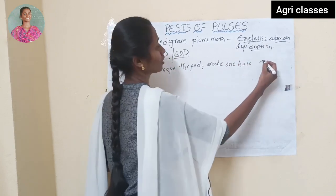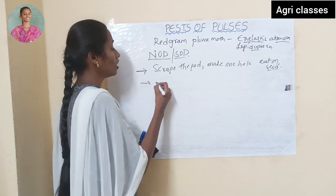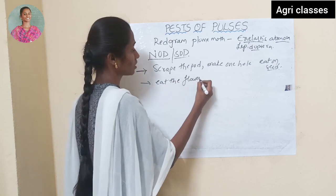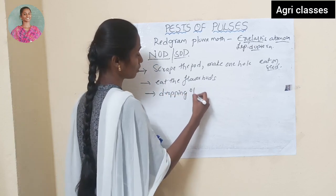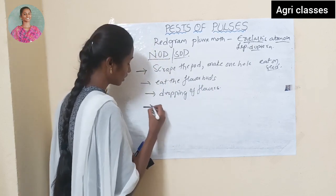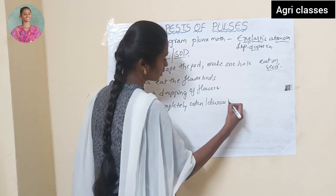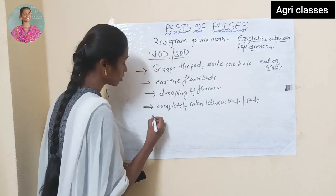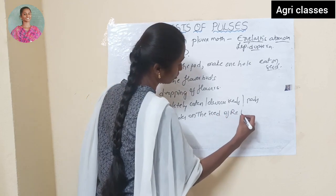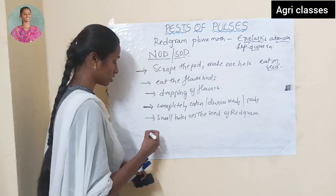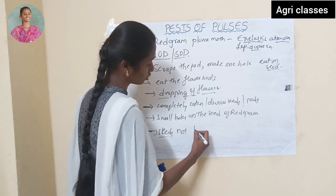They completely devour the seed. They also attack on flower buds — due to attack on the flower buds, we can observe dropping of flowers in severe cases. We can observe completely eaten away or devoured seeds of red gram, and small tiny holes on the seeds due to the attack of Red Gram Plume Moth. These seeds are not useful for consumption.